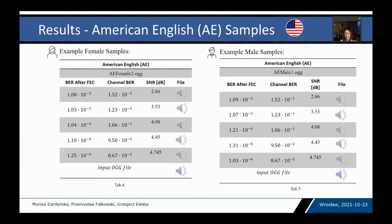This is some interesting information: in the case of the male voice sample, the quality is worse and you can hear small noise. Also, the SNR difference between a BER of 10⁻⁵ and 10⁻⁶ is small — only 0.3 decibels. Therefore, it is much better to design the system for a BER of 10⁻⁶, which practically guarantees perfect voice quality.